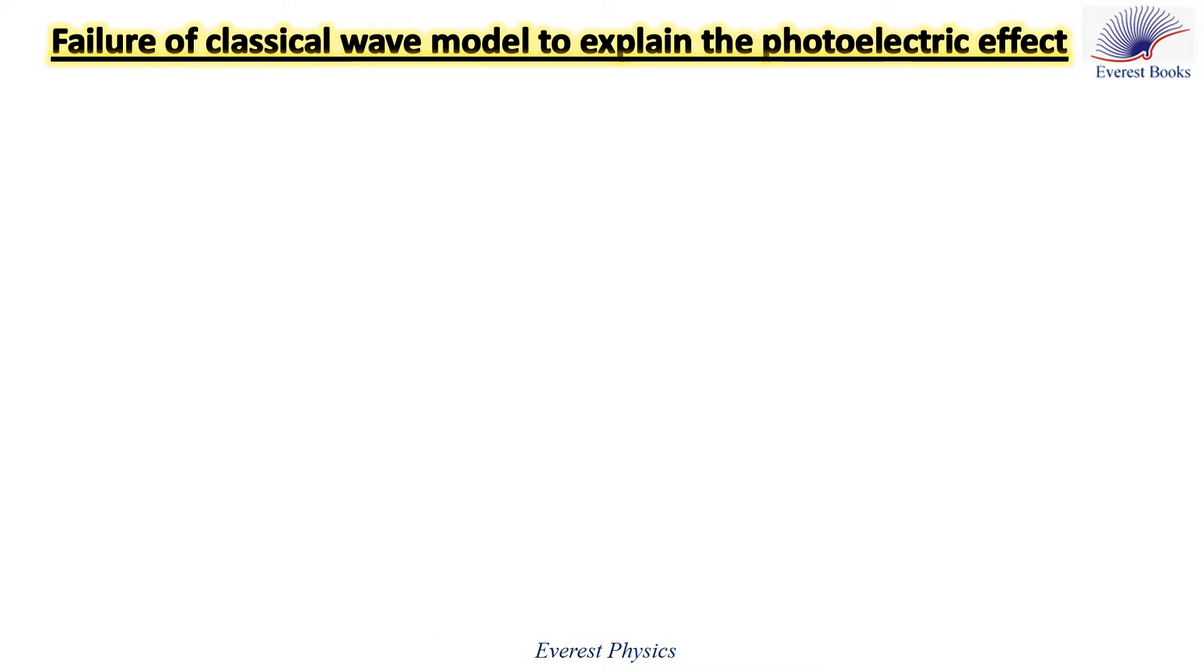In 1902, Philip Leonard did an experiment on photoelectric effect. This experiment supports the failure of the classical wave model of light in explaining the photoelectric effect. Let's discuss the contradiction between the classical wave model and the experimental results.